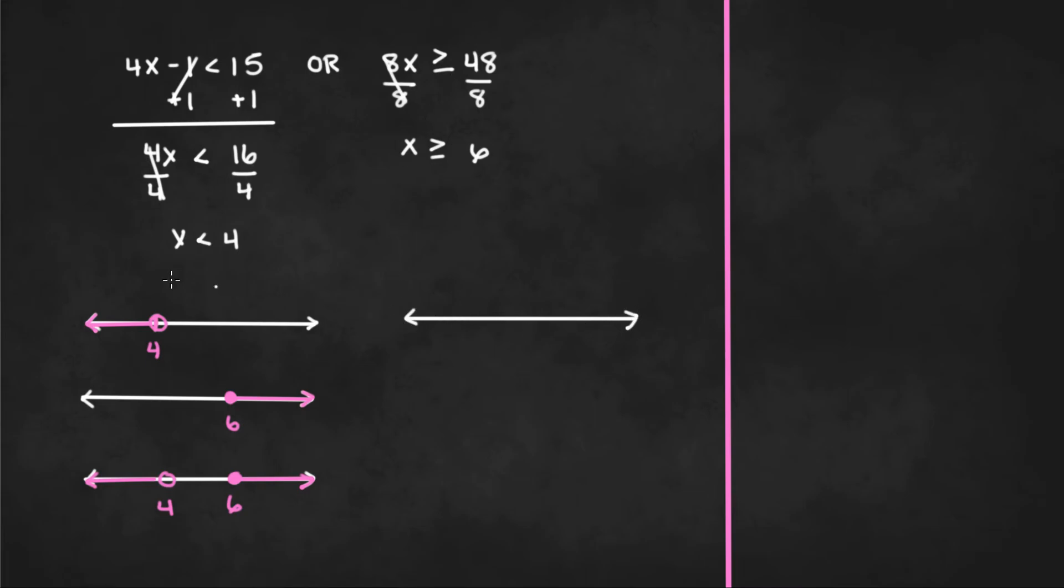So in this case, we'll have 4 right here and 6 right here. So you can go ahead and graph the points. You could put an open circle for 4 since it is less than and since it's greater than or equal to, we put a closed dot at 6. And x is less than 4 like this and x is greater than or equal to 6 like this.